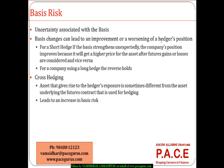Especially when the assets are different — for example, hedging jet fuel with heating oil futures — both assets may move very differently, making the basis highly volatile. That volatility of the basis is what we call basis risk. In some cases, the change in basis can improve the hedger's position; in others, it can worsen it. For a short hedge: if the basis strengthens, the short gains; if the basis weakens, the short loses. The opposite applies for a long hedge.